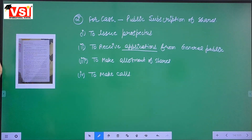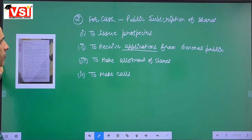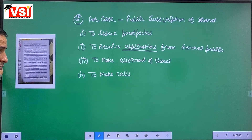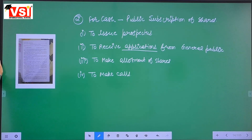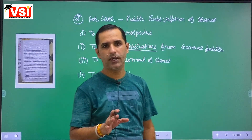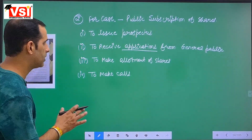After reading the prospectus, the public applies for shares in the company on a prescribed form. The application form is attached with the prospectus. Although today everything is done online, we study the physical procedure because it is in the syllabus. Each application must accompany the application money which is mentioned in the prospectus — to be paid while applying for the shares.